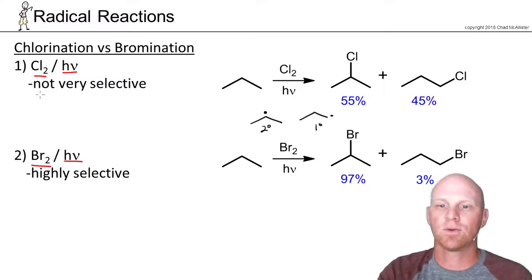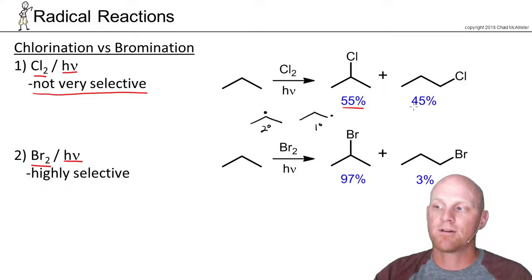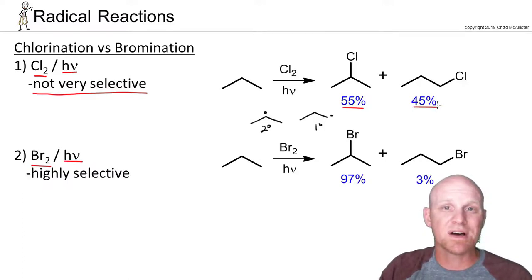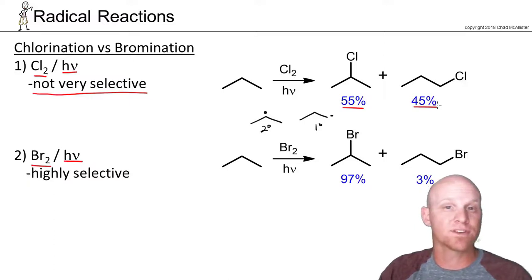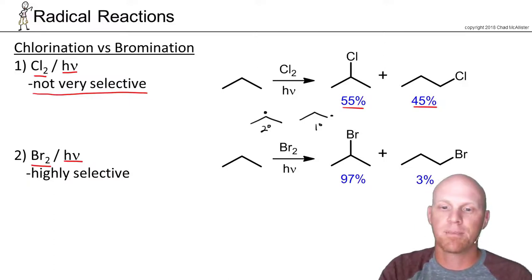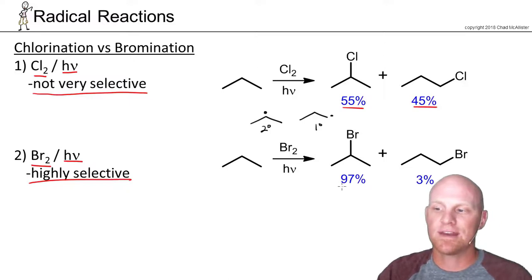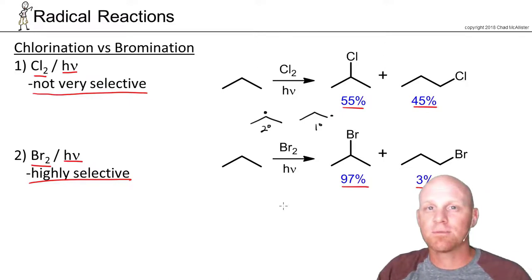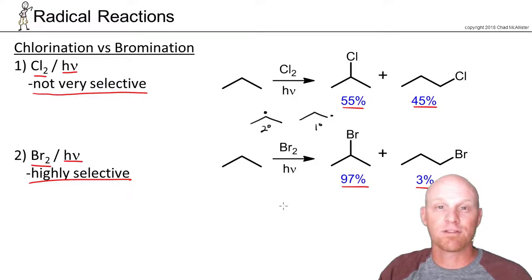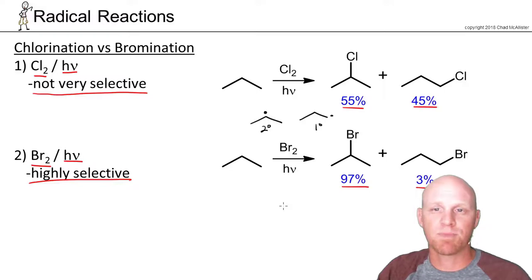It turns out that chlorination is not very selective. We get 55% 2-chloropropane and 45% 1-chloropropane — a little bit of excess for the more substituted alkyl halide going through the more stable radical. But bromination is highly selective: we get 97% 2-bromopropane versus just 3% 1-bromopropane. For chlorination we expect a mixture of products, but for bromination we generally predict one major most-substituted product.